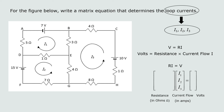The form is going to look like this: a matrix made up of the resistors — resistance in ohms, represented by omega — times the current flow in amps. Because we have three loop currents, that will be a vector with I1, I2, and I3, equals a vector made up of the voltages. We need to figure out what goes into that resistance matrix and what goes into the voltage vector.